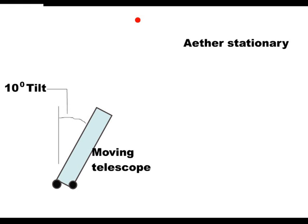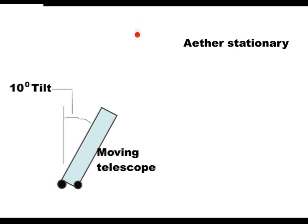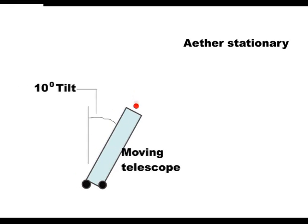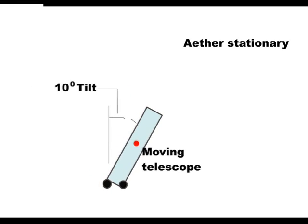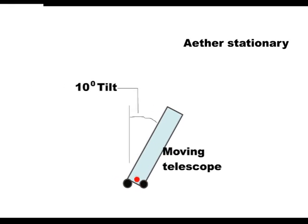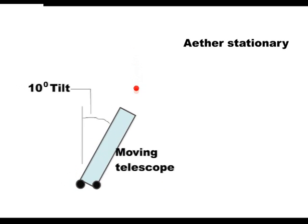However, if the telescope is tipped further, say 10 degrees, then the starlight will then be visible again in the eyepiece. It has to be tipped further because the light is now slower when in the telescope.